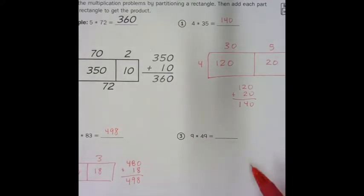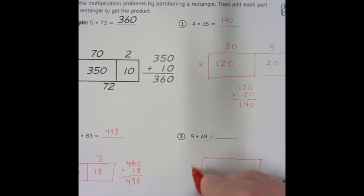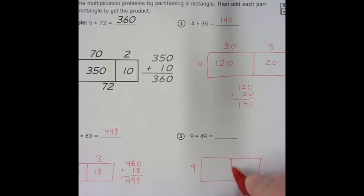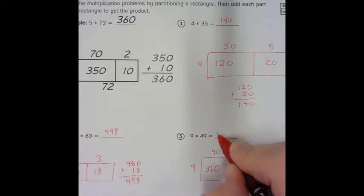Okay, so now we've got 9 times 49. So again, you make your rectangle, put your 9 here on the side, partition your rectangle here, and you have to break this apart into numbers that are easy to multiply by, which is 40 and 9. 40 times 9, so 4 times 9 is 36, and you add your 0 for your extended fact for 360. 9 times 9 is 81. Then you just add your two boxes here together, so it's 360 plus 81. 0 plus 1 is 1, 6 plus 8 is 14, 1, 3 plus 1 is 4, for an answer of 441.